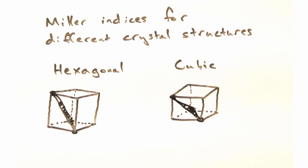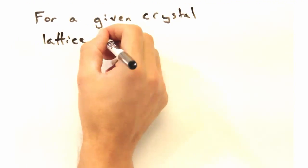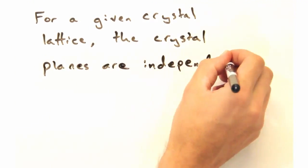Because Miller indices only depend on lattice vectors, we can also note that the crystal planes are independent of any centering or basis.